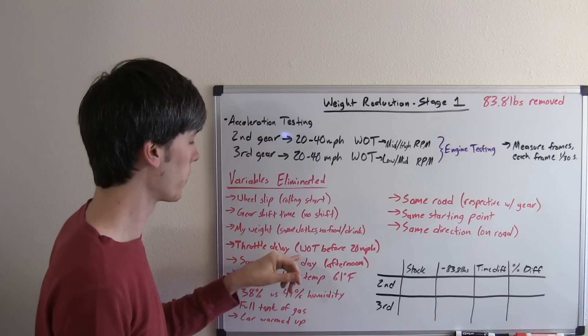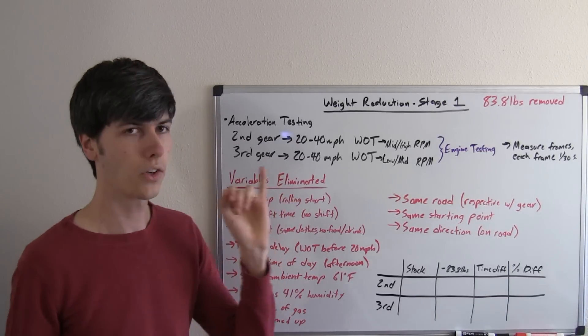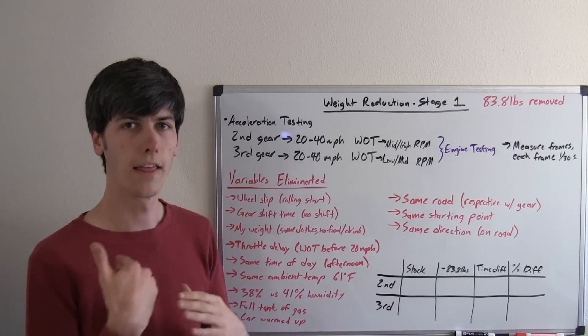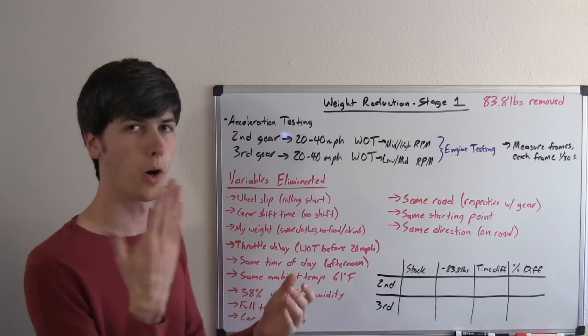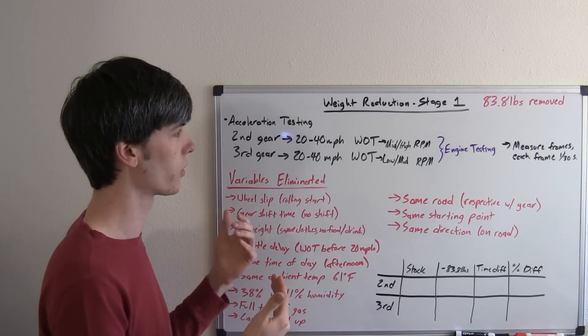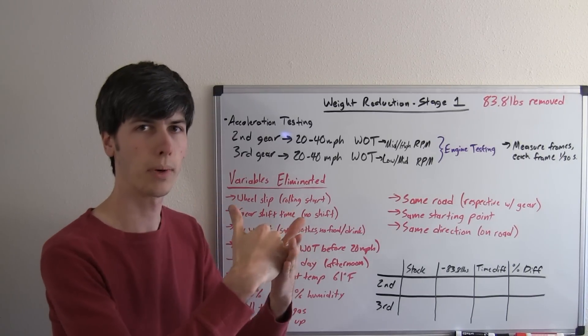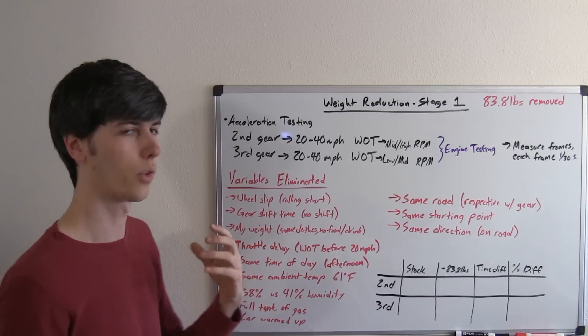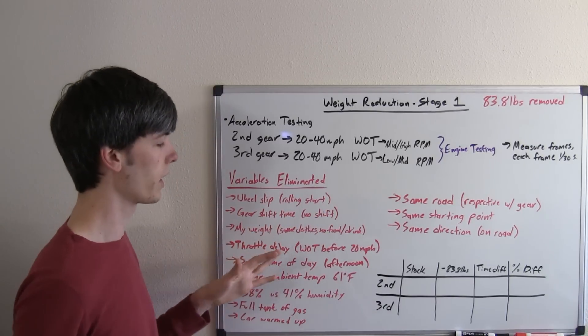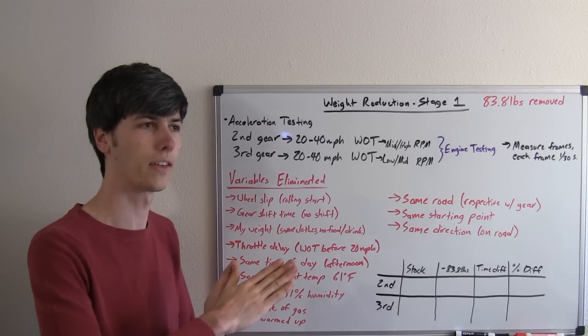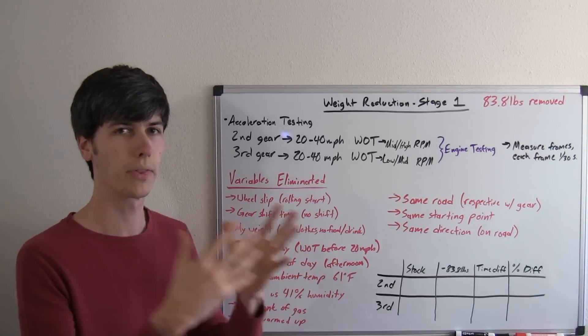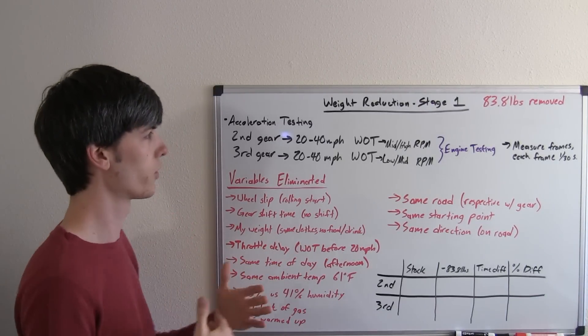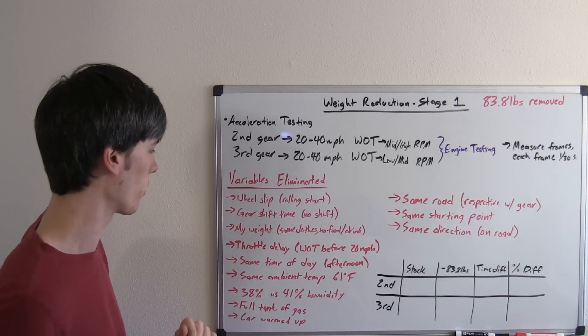Throttle delay. Basically what I did was I started accelerating at about 17 miles per hour. That allowed the throttle to be open fully and then once the throttle was open fully, once it hit 20 miles per hour, I started the timing. So I wanted to eliminate any delay in me pressing the gas pedal from starting at 20. So I put that before 20 miles per hour so that it would always be at wide open throttle once it hits 20 miles per hour.